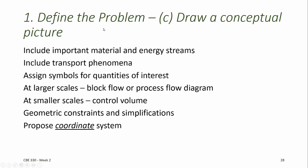The third step in the problem definition is to draw a conceptual picture of the model. This conceptual picture should include important material and energy streams. It should include transport phenomena that need to be captured by the model. And where possible, we should assign symbols for quantities of interest that we think will appear in our model equations. At larger length scales, our conceptual picture might be something like a block diagram or a process flow diagram. And at smaller length scales, it might be a control volume. We'll talk about control volumes in the next chapter.